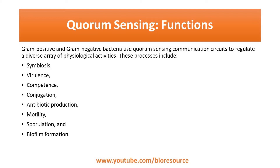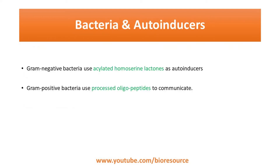This is seen in both gram positive and gram negative bacteria. In general, gram negative bacteria use acylated homoserine lactone (AHL) as the autoinducer, whereas gram positive bacteria use processed oligopeptides for communication. So AHL is used by gram negative bacteria and oligopeptides are used by gram positive bacteria.